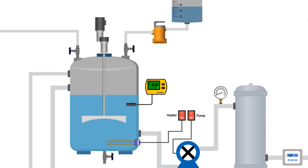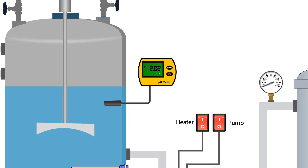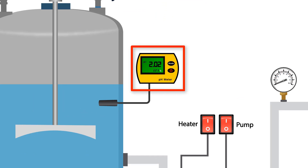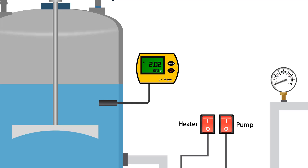Turn on the agitator to make the solution homogeneous. Monitor the pH meter. The solution pH should be around 2.